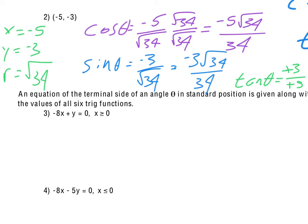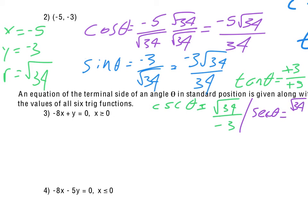With the reciprocals, the cosecant is the reciprocal of sine. It's easiest to take the unrationalized version and just flip it: square root of 34 over negative 3. The same for secant — take the unrationalized version of cosine and get square root of 34 over negative 5. And cotangent ends up just being 5 thirds, the reciprocal of the tangent.